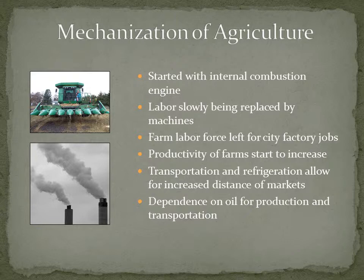Along with the Industrial Revolution, agriculture was impacted as well. The reliance on machinery became more important as farms grew larger, and a lot of the labor force was moving to the city to take factory jobs because it was a more dependable income. The development of the transportation and refrigeration system changed the markets, and it really put agriculture on a dependence on foreign oil for farm production.